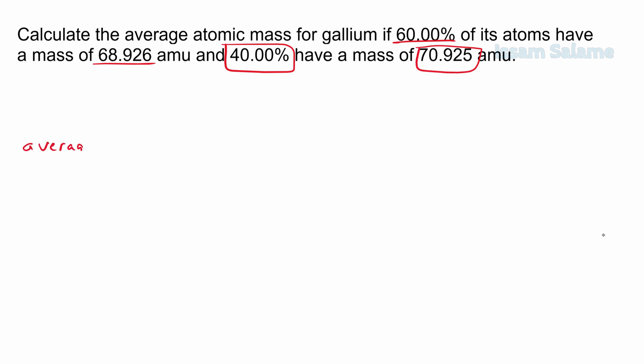And then we write average atomic mass is equal to, we multiply the first percentage by its corresponding mass, we add it to the second percentage multiplied by its corresponding mass, and then we divide by 100.